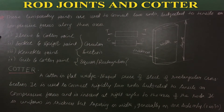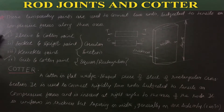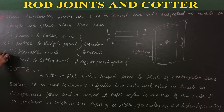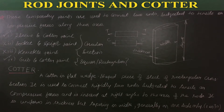In sleeve and cotter, socket and spigot, and knuckle joint, the cross-sectional area of the two rods is circular in nature. But in the case of gib and cotter joint, it is square or rectangular. In the new syllabus of 2021, only sleeve and cotter and gib and cotter are in the syllabus. Socket and spigot and knuckle joint are not in our syllabus. So we have to draw assembly and disassembly drawings for sleeve and cotter joint and then gib and cotter joint.